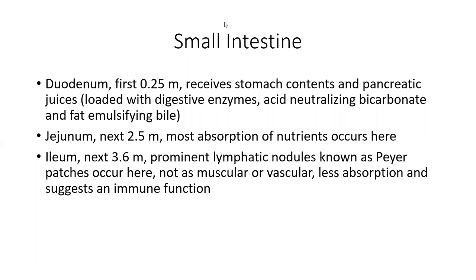The small intestine's first roughly one foot is called the duodenum. It receives contents from the stomach, and this is where pancreatic juices enter the digestive system. It contains a lot of bicarbonate, which is a base to neutralize the strong acids coming from the stomach, bringing the pH back closer to neutral. Bile from the gallbladder is also secreted into this portion, and bile emulsifies fats that have been broken down by lipases.